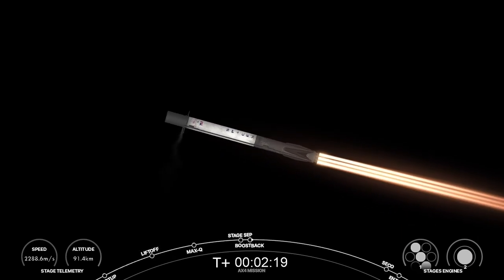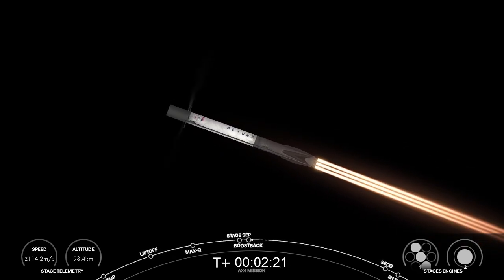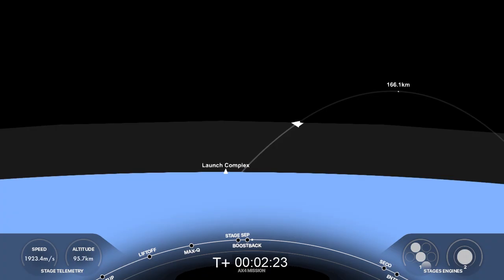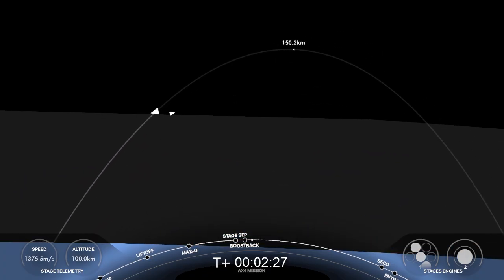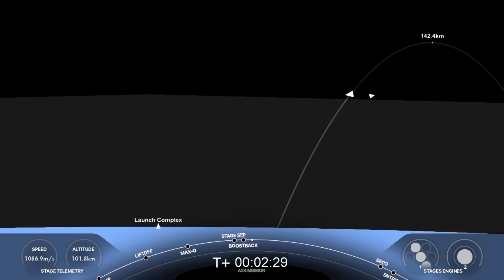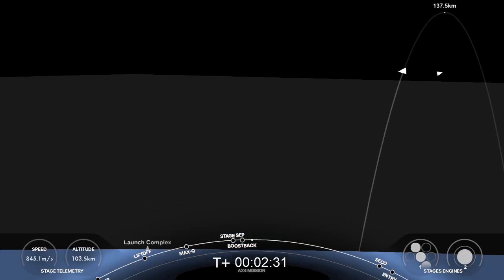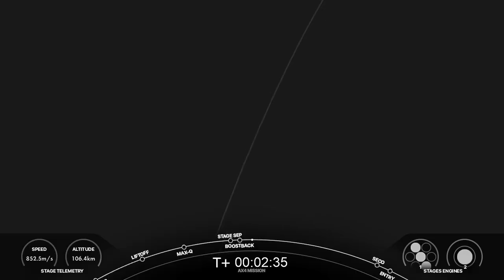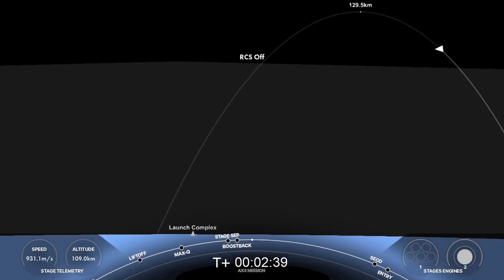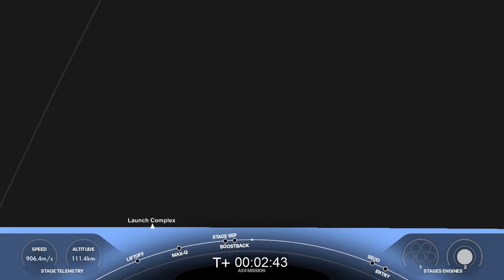There we had confirmation of all four of those events. Incredible views on our screen here too as that first stage boosts its way back to Earth. Stage two alpha. And confirmation from our commander that we have entered the two alpha abort mode. Of course we are getting lots of cheers from behind us here at Mission Control here in Hawthorne California. And at this point our AX4 crew is on their way to space.